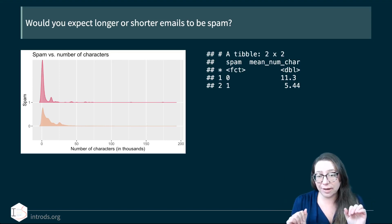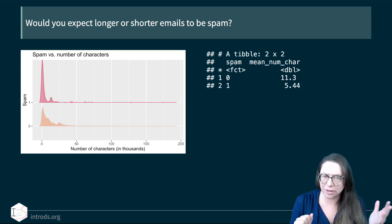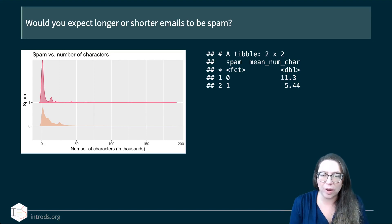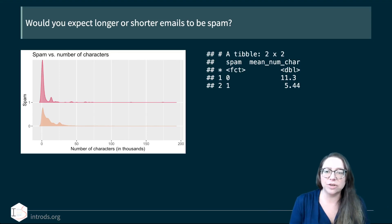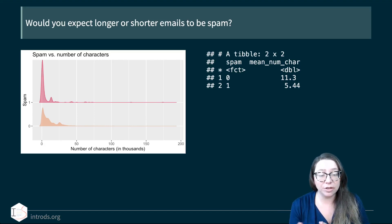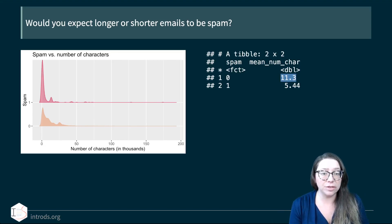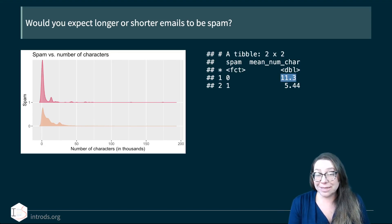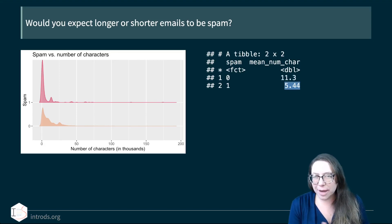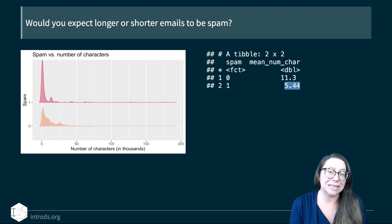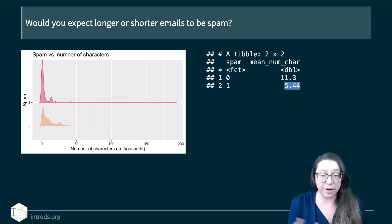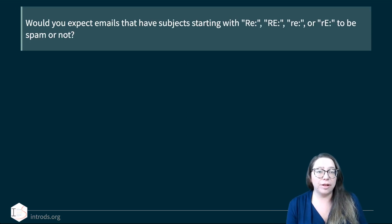We can see that both distributions of number of characters are incredibly right-skewed, and those character counts are given in thousands — so a 200,000-character email is awfully long, and very few stretch out that far. We can also look at the mean number of characters for spam and non-spam emails. We see a higher mean of 11,300 characters for non-spam emails compared to spam, so our guess that longer emails are less likely to be spam might be correct.